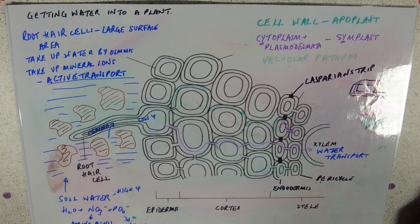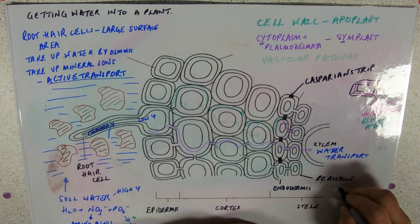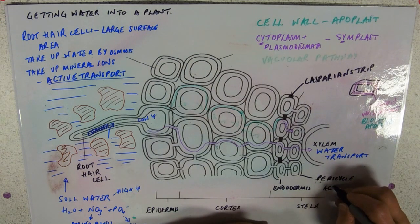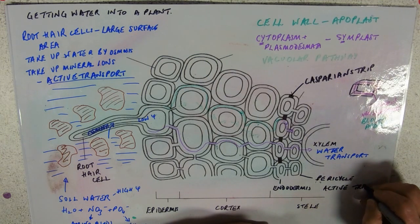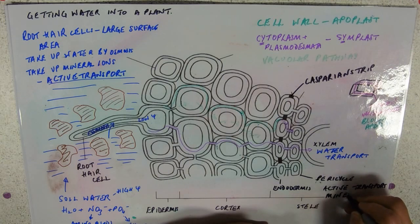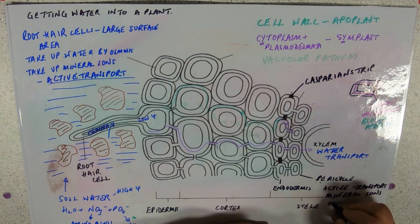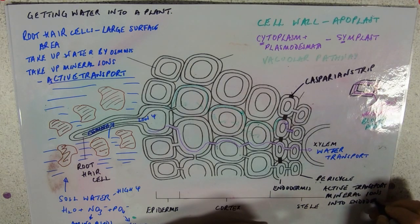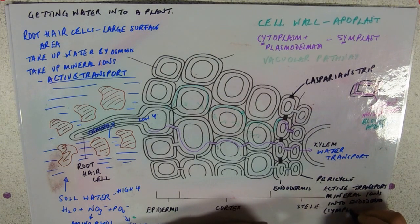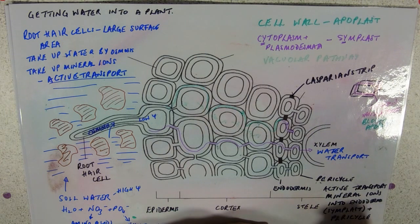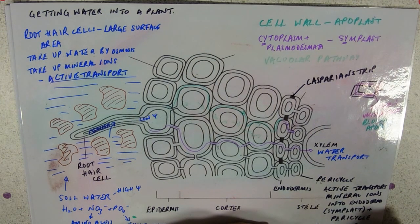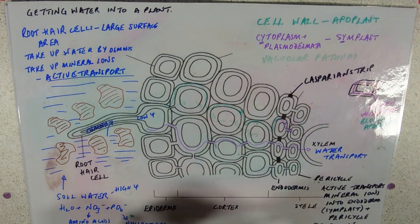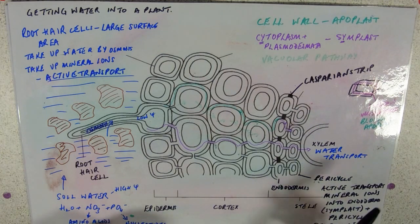And the mineral ions are going to have to go by active transport. So we're going to get active transport of mineral ions into the endodermis and pericycle. So what we've got going on there is what we would call selective uptake. So we're actually going to be effectively pumping our mineral ions in there. So you need to know the significance of the Casparian strip.